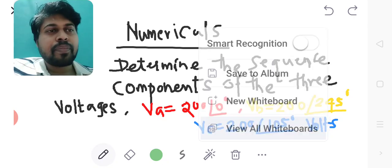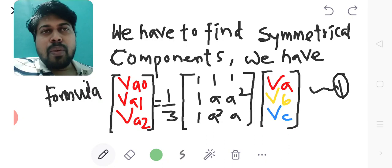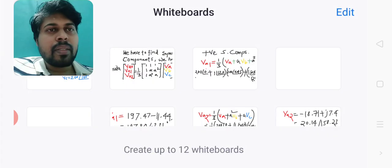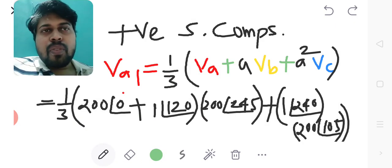We need to find the symmetrical components in terms of phase voltages, as phase voltages are given. The expression for symmetrical components is [VA0, VA1, VA2] equals 1/3 times the matrix [1,1,1; 1,A,A²; 1,A²,A] multiplied by the column matrix [VA, VB, VC], where VA, VB, VC are given.